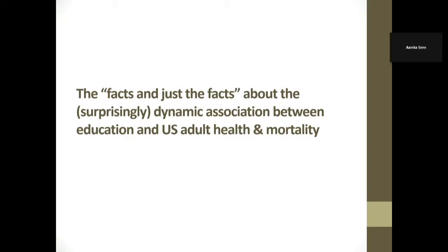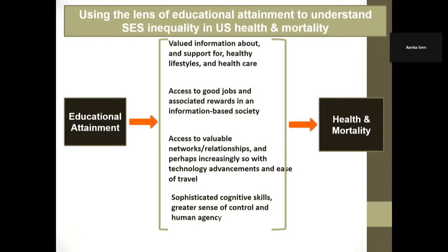You'd think that the relationship between education — which is the marker we're using for inequality — and U.S. adult health and mortality would be simple. The usual way we think about education's influence over health and mortality is very much an agentic way: educated people have access to information and support for healthy lifestyles; it gives you access to good jobs, valuable relationships, sophisticated cognitive skills, a greater sense of human agency and control over your life. It's very agentic — it's really about us making decisions and behavior.